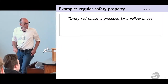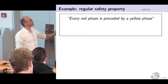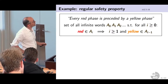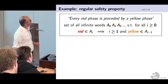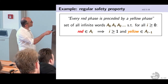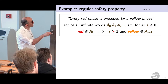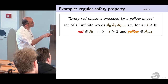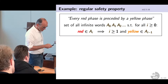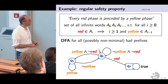Another example of a regular safety property for a traffic light: every red phase is preceded by a yellow phase. Formally, this is the set of infinite words A0, A1, ... such that for every position i, if red is contained in A_i, then i > 0 and yellow is contained in A_{i-1}. This is a regular property — its bad prefixes can be represented by an automaton.